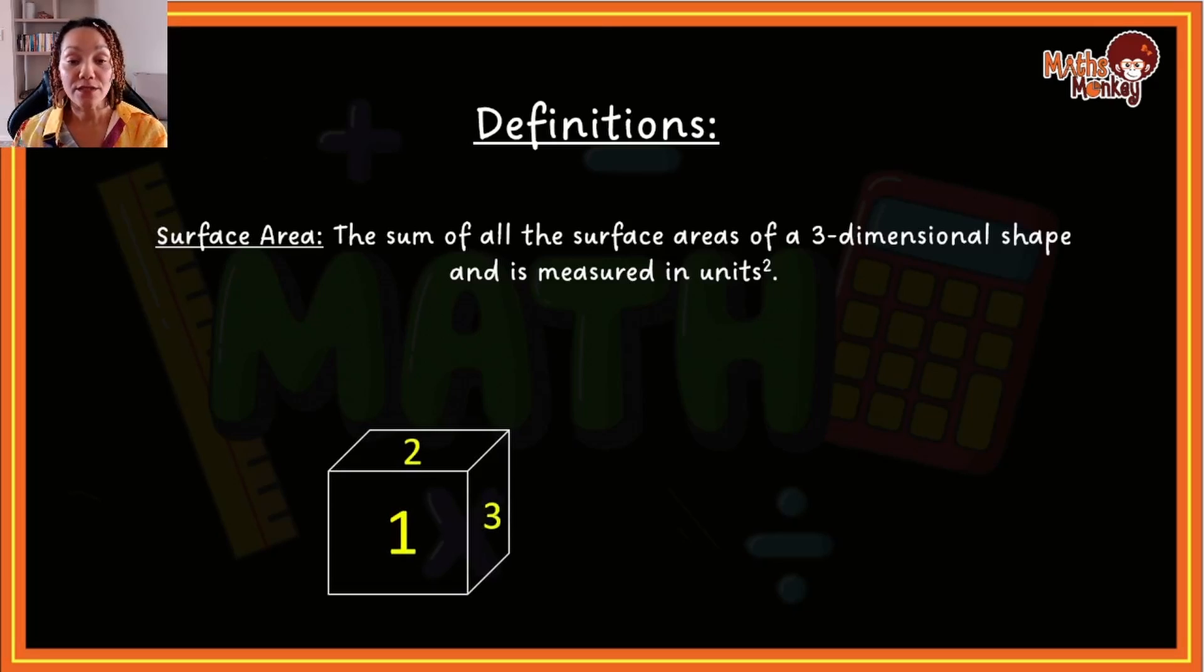So surface area of this cube, you will see there are one, two, three, but at the bottom and on the left and at the back is also three. So this will have six surfaces. So if we were to calculate the surface area of a cube, we would then calculate the area of six surfaces. Right?